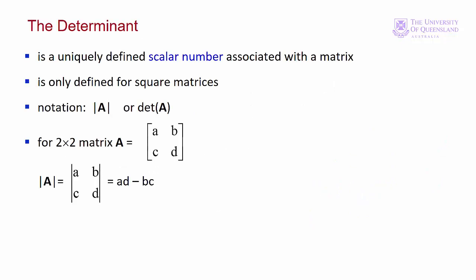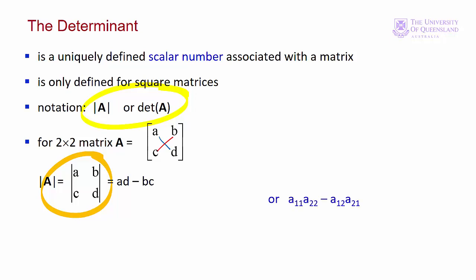This brings us to the determinant. The determinant is a unique scalar for a square matrix. The notation we use is the symbol for the matrix with a vertical line on either side, or just det(A). The determinant is the denominator we found earlier — where we have two equations and two unknowns, the matrix of coefficients is A, and the denominator is ad minus bc. For a 2x2, the determinant equals the product of the principal diagonal minus the product of the off-diagonal elements. This is a second-order determinant.